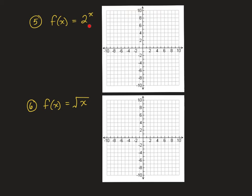The next parent function is f of x equals 2 to the power of x — an exponential function. If you put in 0, 2 to the power of 0 is 1. Then 2, then 4, then up to 8, then 16. Going the other direction, it gets closer and closer to the x-axis but never actually touches it. It gets exponentially bigger in the other direction. This is called an exponential function.